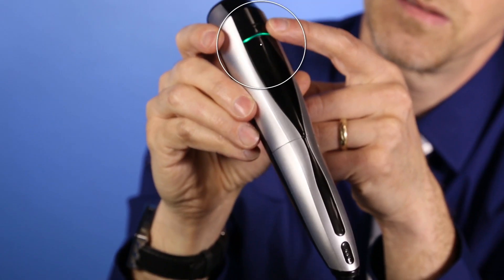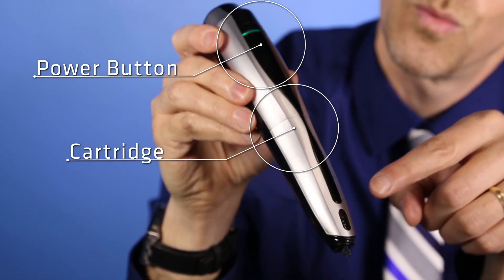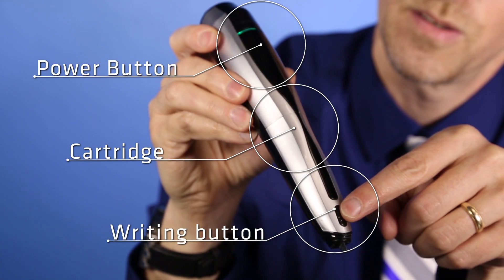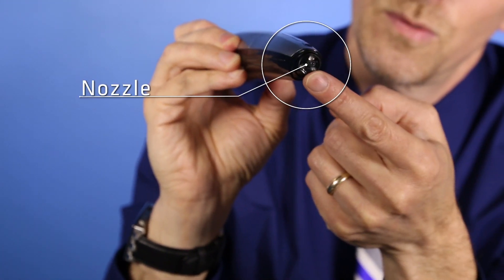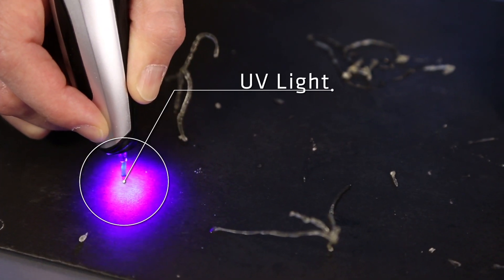It uses photopolymers and UV light to draw basically in space. One of the neat things about this is because they're using these polymers, and they've really invented this stuff, they can put other things inside the polymers.